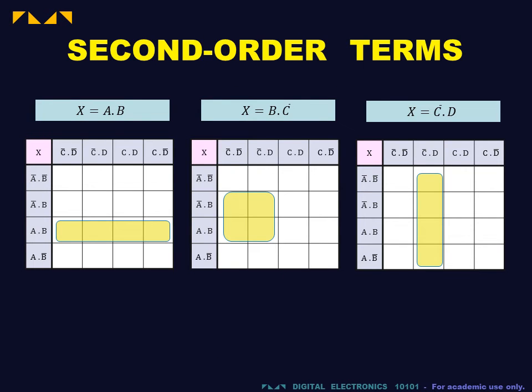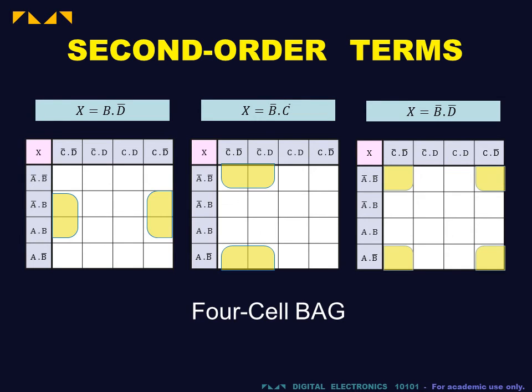Second order terms are represented by bags containing four cells. These bags may wrap around horizontally, vertically, or in the case of the B bar D bar bag, both.